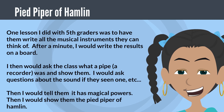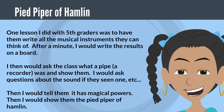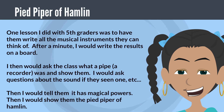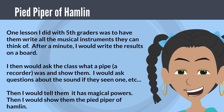One lesson I did with fifth graders was to have them write all the musical instruments they can think of. After a minute, I would write the results on the board. I then would ask the class what a pipe — a recorder — was and show them. I would ask questions about the sound, if they had seen one, etc. Then I would tell them it has magical powers.